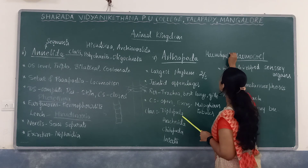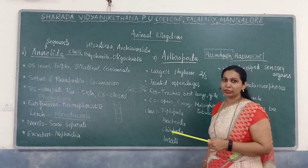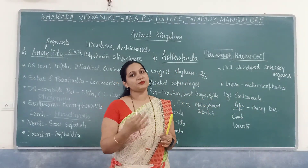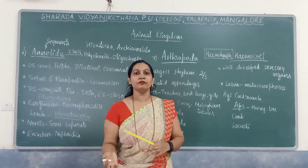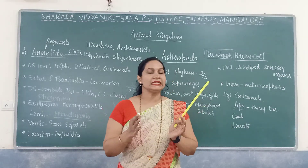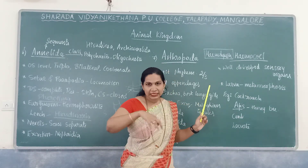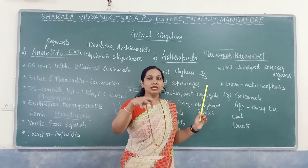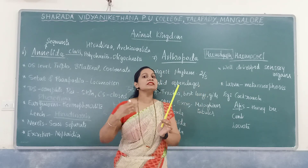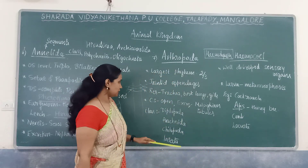Cockroach blood is known as haemolymph because there is a lack of haemoglobin. We humans have haemoglobin, which is why our blood is red. Since cockroaches lack haemoglobin, the pigment is absent and it is colourless haemolymph. The haemocoel is a cavity where haemolymph is present and all body organs are bathed in it — that is the open circulatory system.